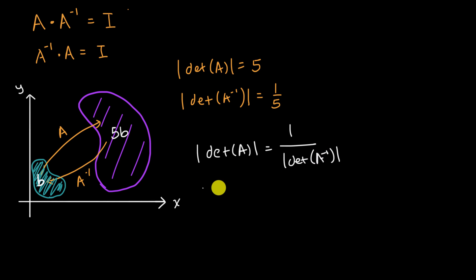And we could, of course, write that the other way around. The absolute value of the determinant of A inverse should be equal to one over or the reciprocal of the absolute value of the determinant of A. This comes straight out of this property that the absolute value of the determinant tells you how much you scale an area by.